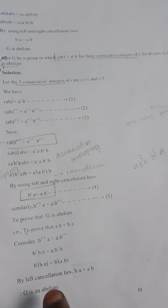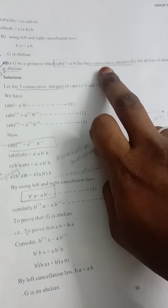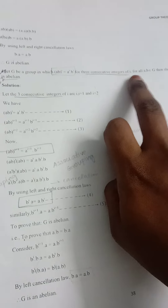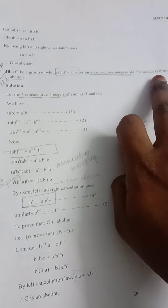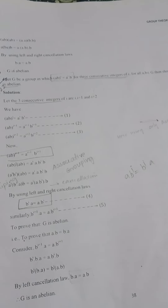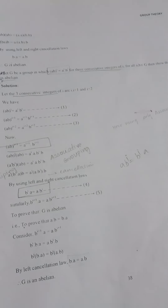From b * a = a * b, we have proved that G is an abelian group. The three consecutive integers condition on G was sufficient to prove commutativity for all a, b in G. Hence the proof is complete.